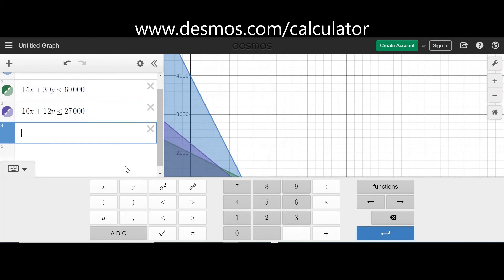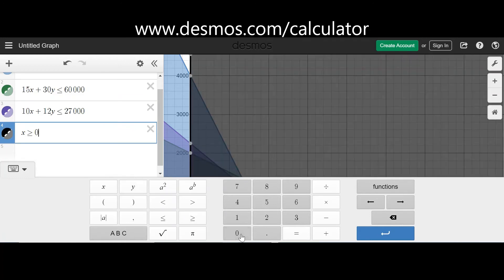And then we have non-negativity constraints, so we cannot have negative numbers. So that's positive. And then we have Y is greater than or equal to 0.